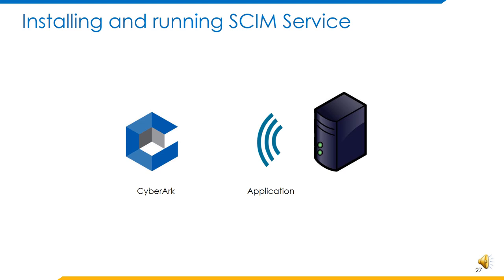Now that all the artifacts on the CyberArk end are well configured, the SCIM service needs to be installed and run on the SCIM server. Installation as a Windows service can be easily achieved using a batch script provided with the integration package. After this installation, we can configure the Windows service to run automatically on server restart. The default port which the SCIM server uses is 8080. This kind of port-related configuration can always be changed in the config.yml file. More details shall be covered as part of the demo. Along with installation and running this web service, opening the firewall on the server for this particular port is also quite important for SailPoint to communicate with the SCIM service.